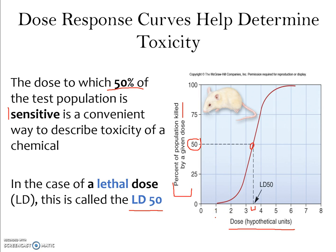This curve also shows what the tolerance curve showed us: a low percentage of individuals are killed by a low dose, then we reach a threshold where even a small increase in dose significantly increases the percentage killed. At the very top, a few individuals hang on even at a really high dose.